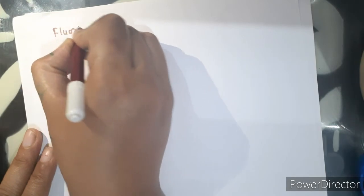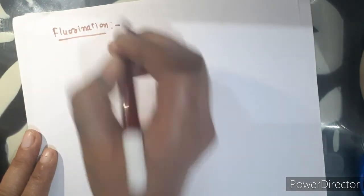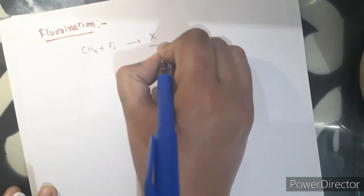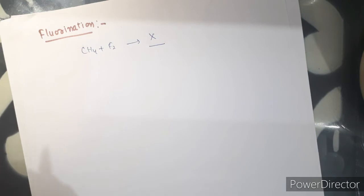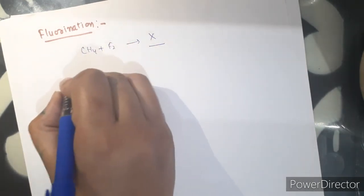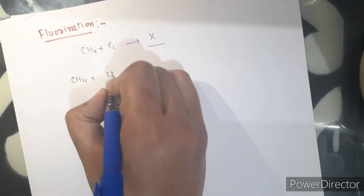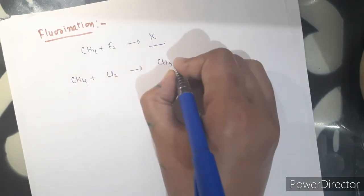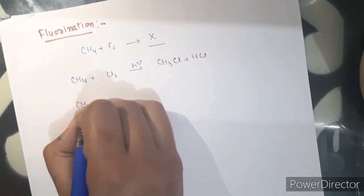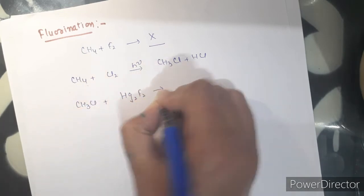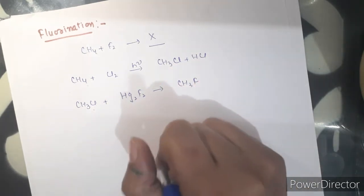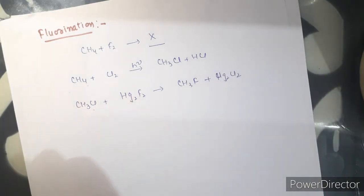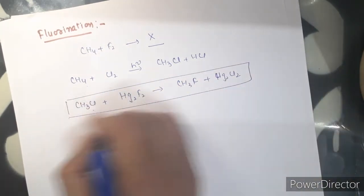In fluorination, fluorine's reactivity is very high, so direct fluorination is not possible — the reaction is too vigorous and may even catch fire. So instead of direct fluorination, we first do chlorination to convert the alkane into an alkyl halide, and then that alkyl halide reacts with mercurous fluoride, so chlorine is replaced by fluorine. This reaction is named as the Swarts reaction.